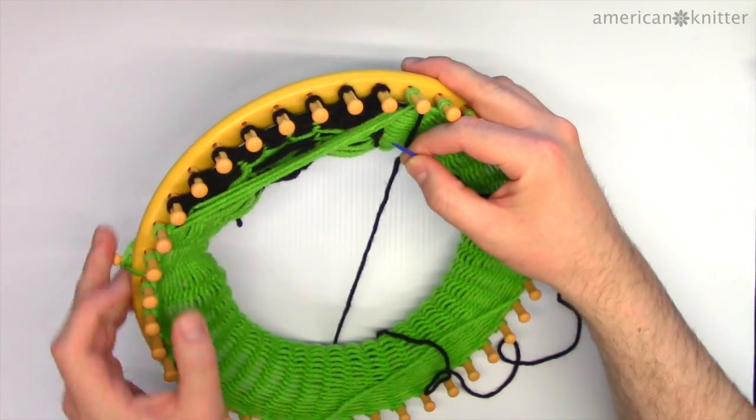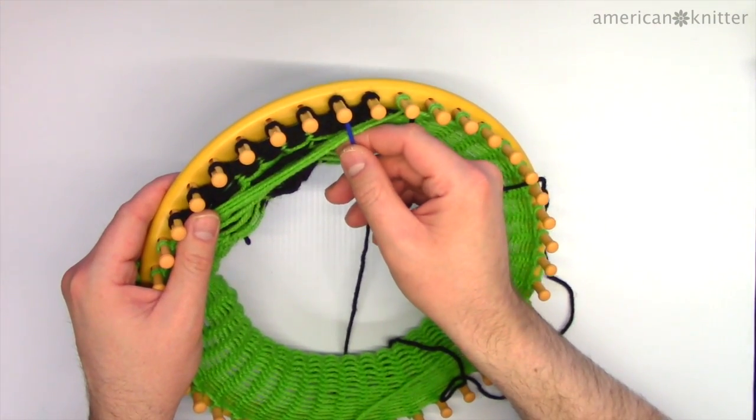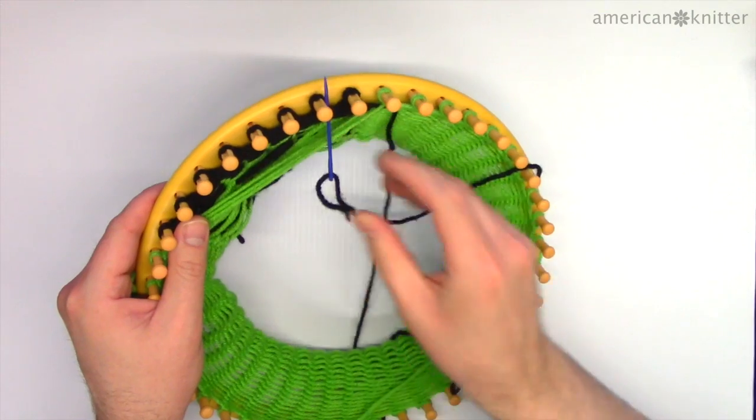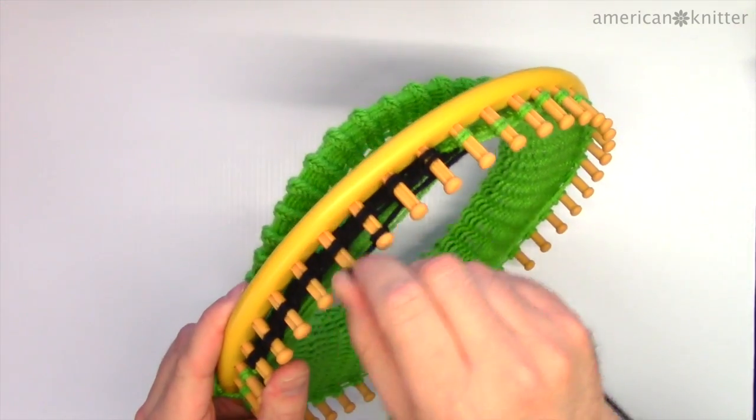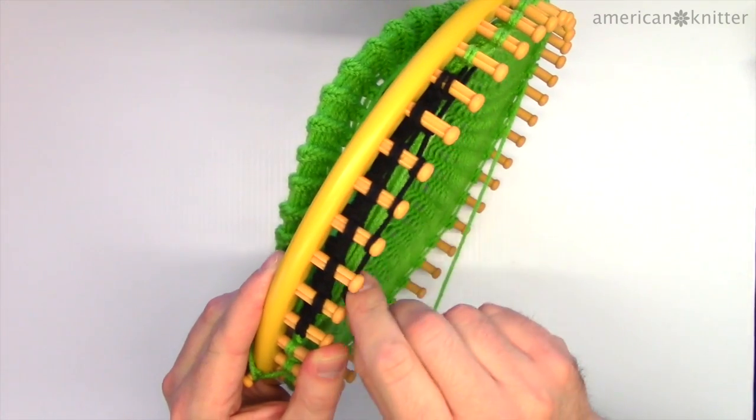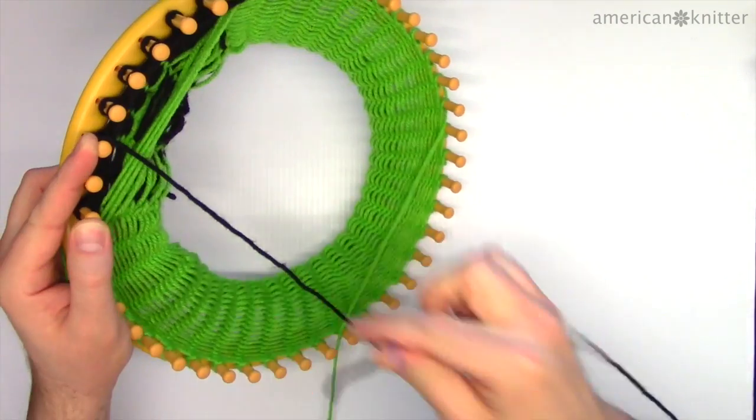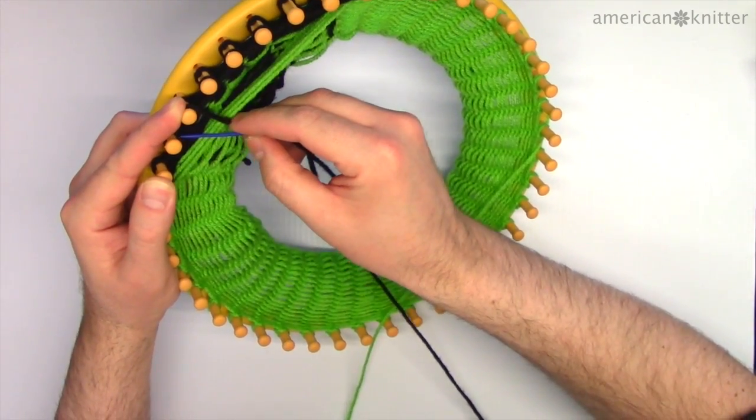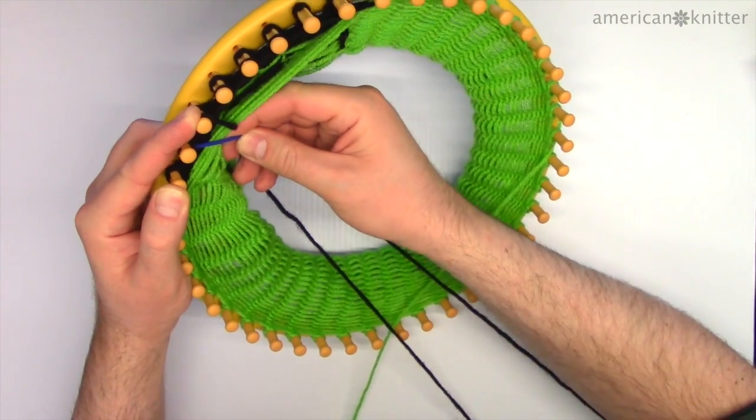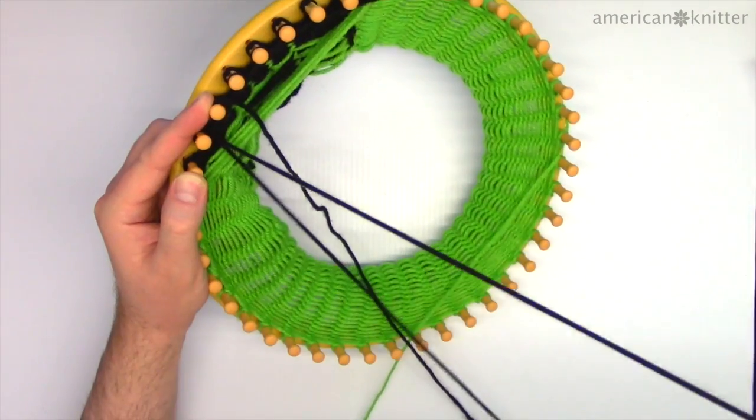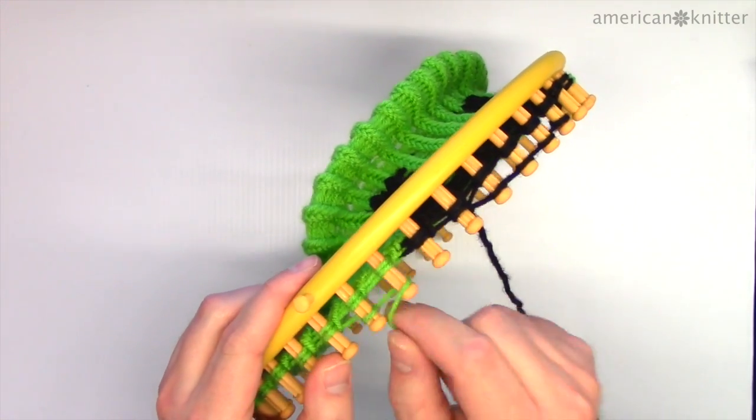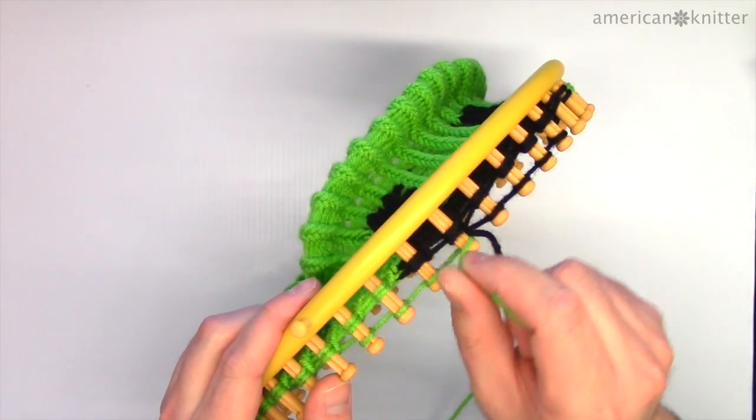For this part, we'll first secure the black yarn to the black stitch on peg number 9 and then wrap pegs 8 through 5, being sure to secure the black yarn at the end of the row onto the black stitch of number 4. Then wrap all the other pegs with the green yarn. This section of the pattern continues back and forth for a total of 5 rows. Then we'll be ready for the next step.